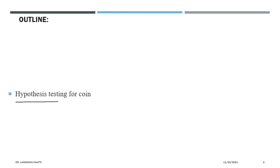In hypothesis testing, the idea is that we try to reject the null hypothesis in order to support the alternative hypothesis H1. There will be two hypotheses: one we call the null hypothesis, generally denoted by H0, and the other is H1, which we call the alternative hypothesis.